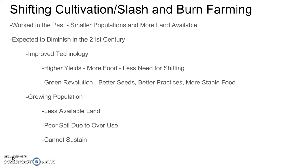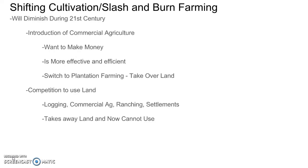Shifting cultivation is also expected to diminish in the 21st century because of growing populations, meaning there is less land available. This requires a lot of land, as they're constantly clearing, burning, farming, and moving — sometimes seven years or so before returning to previously used land. With a growing population, there's less land available, poor soil from overuse, and this land simply cannot sustain the growing population.